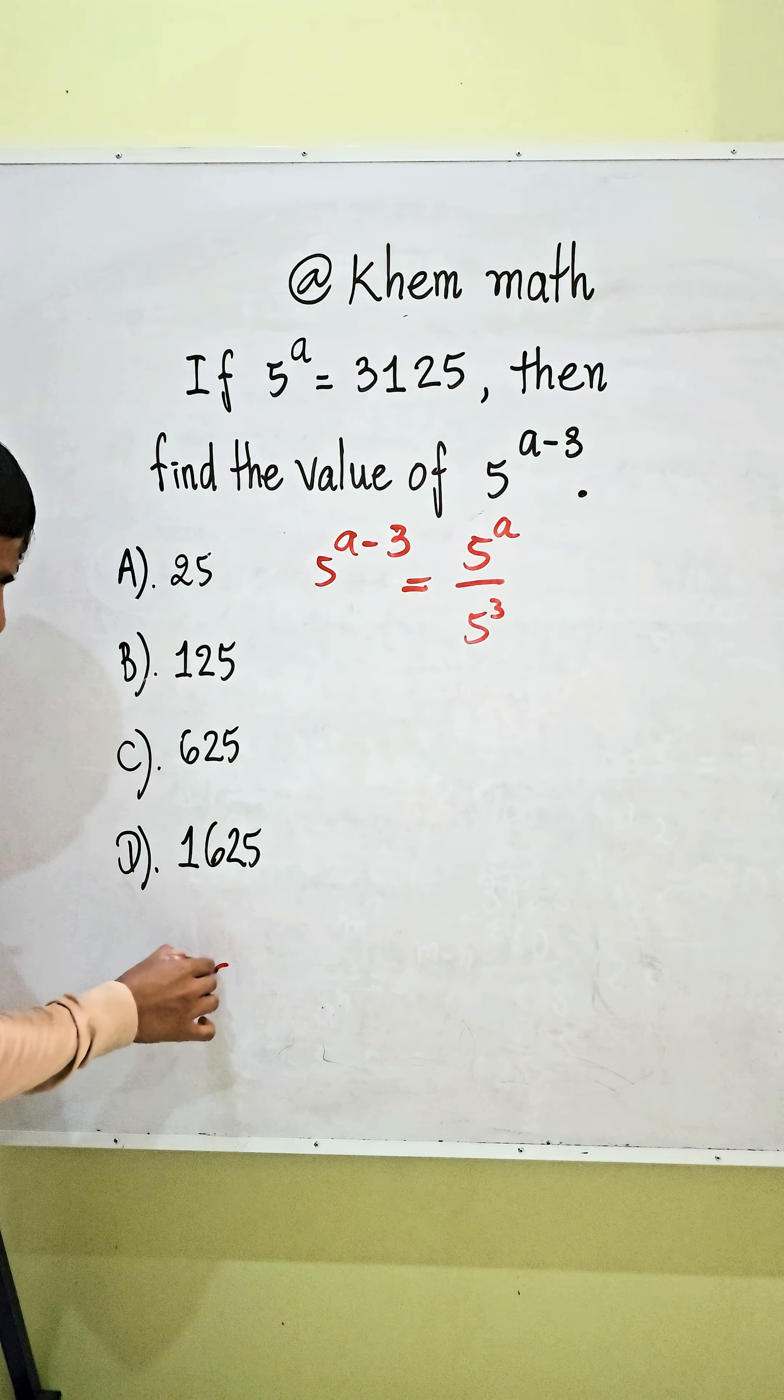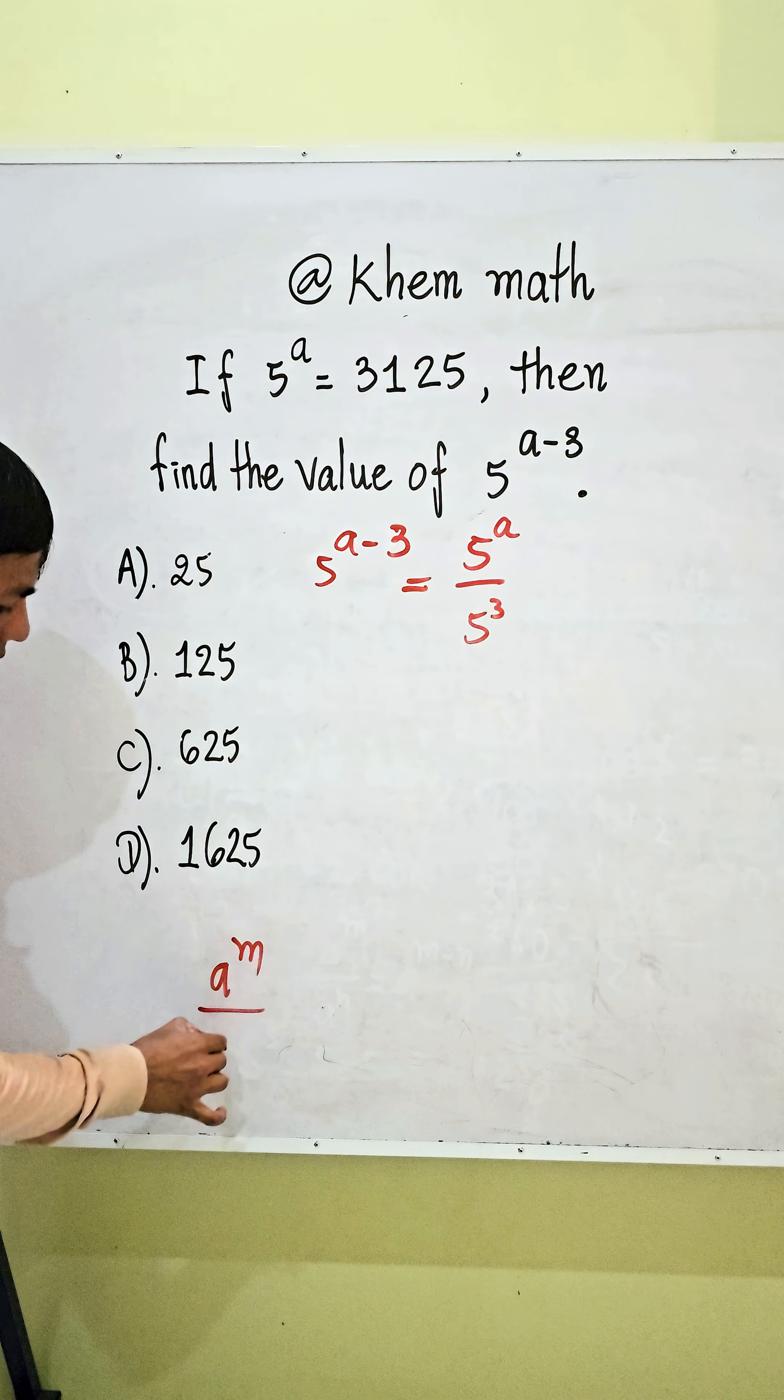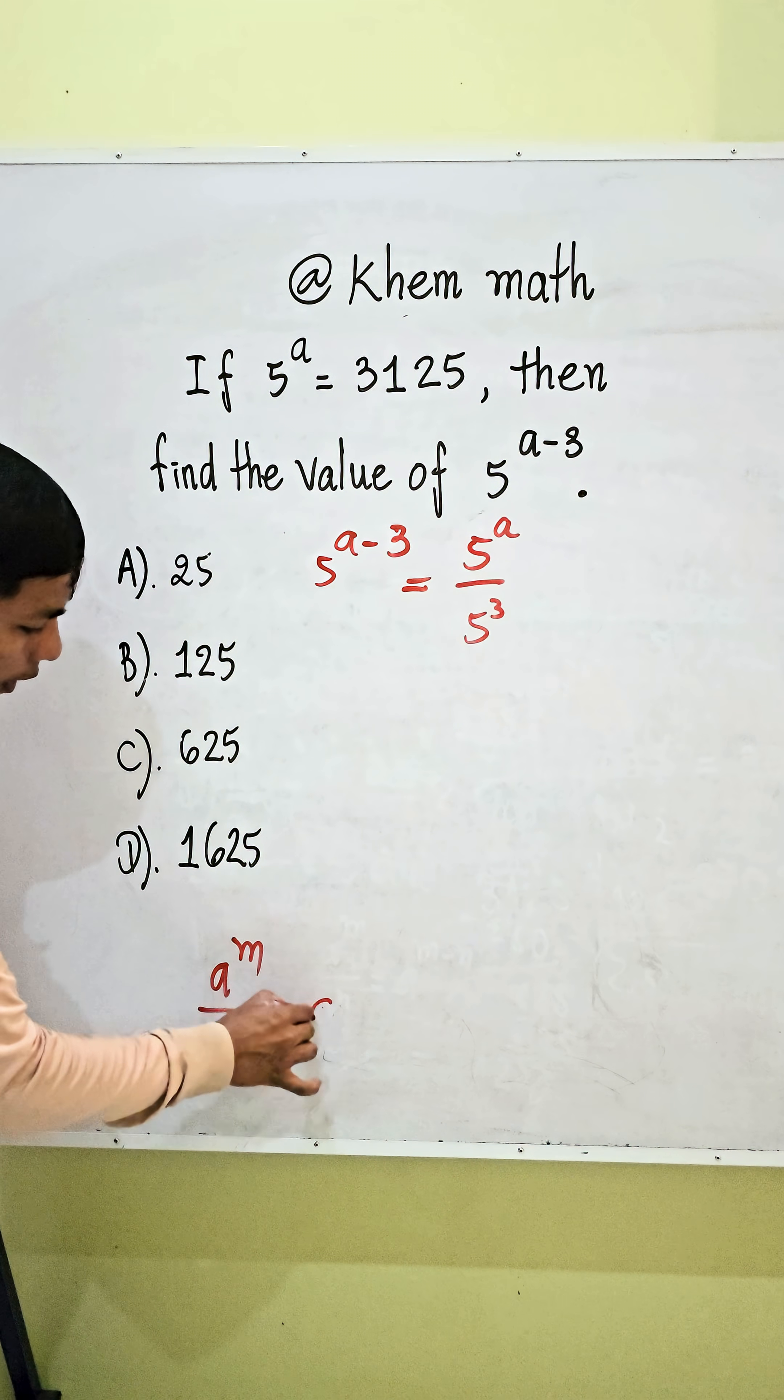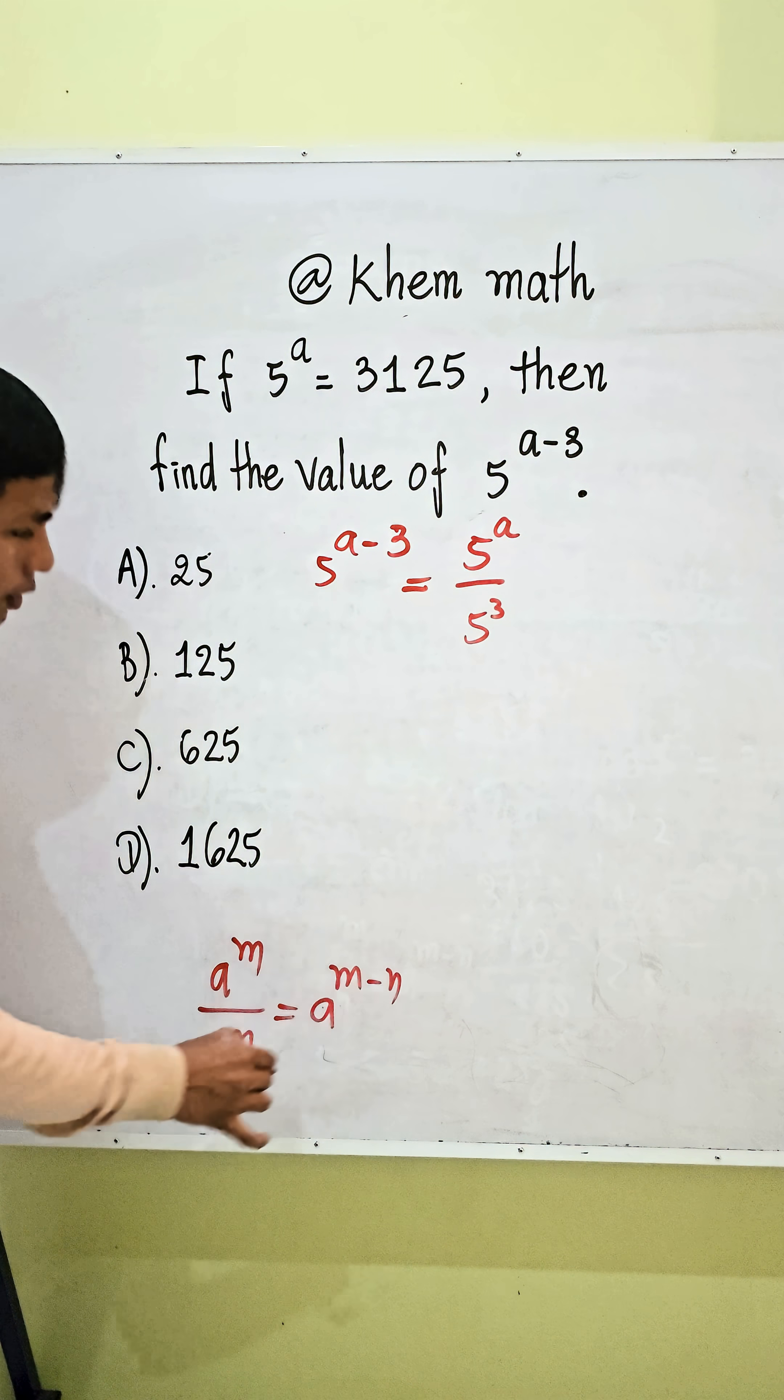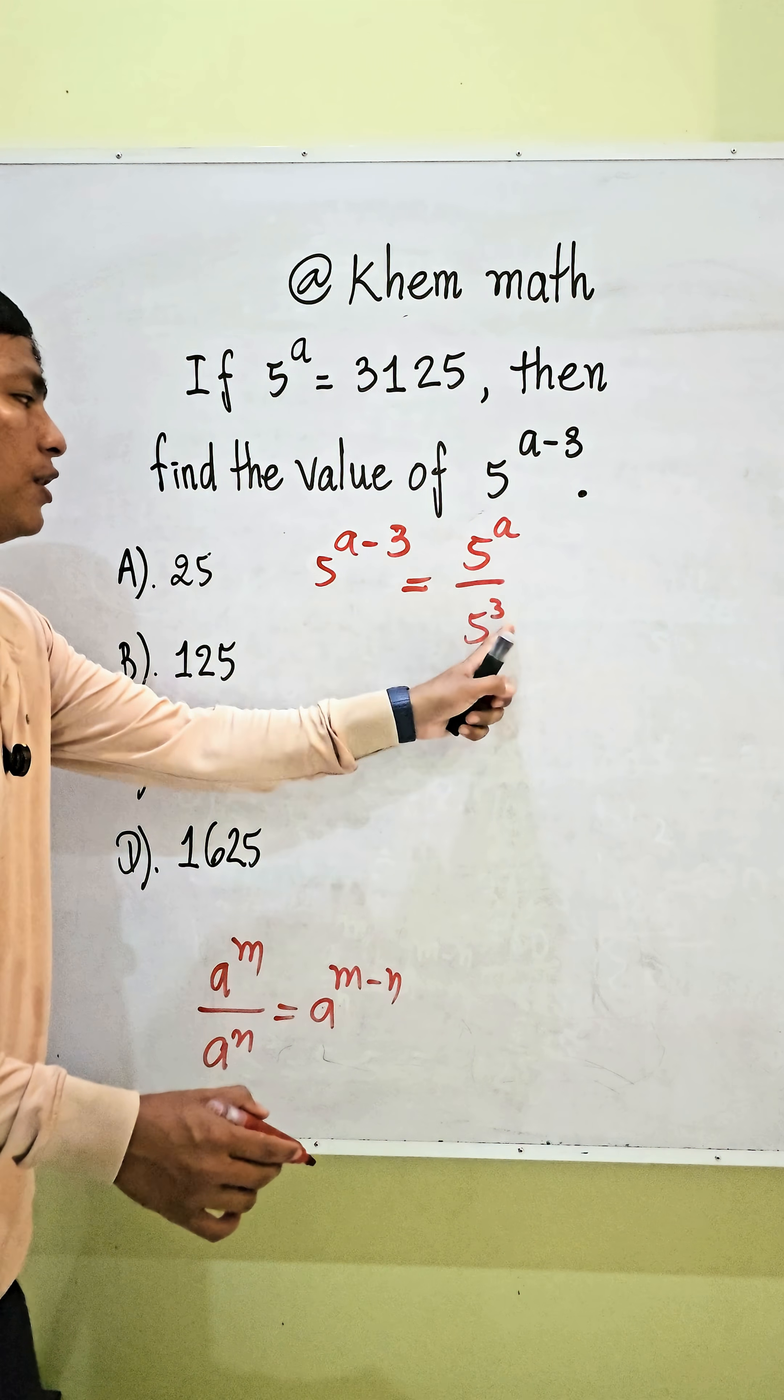Here, we use the formula A power M divided by A power N equals A power M minus N. So we get 5 power A minus 3.